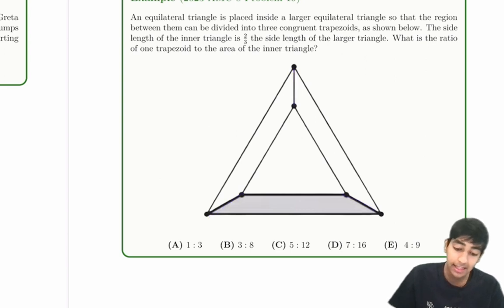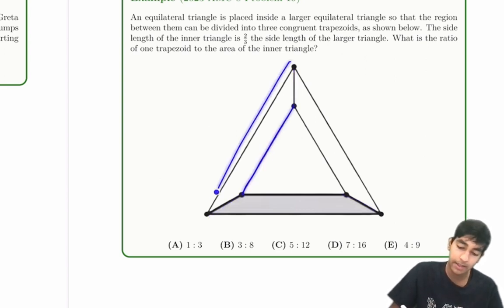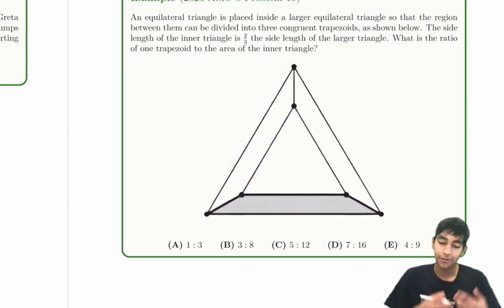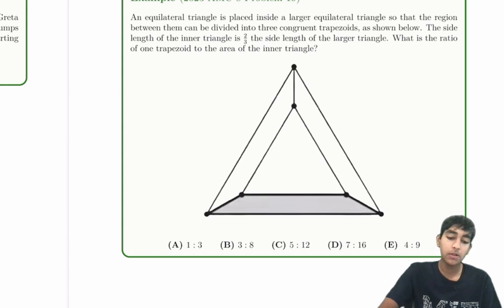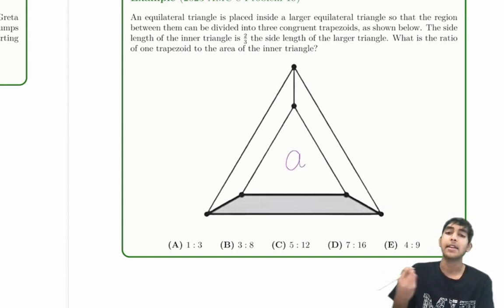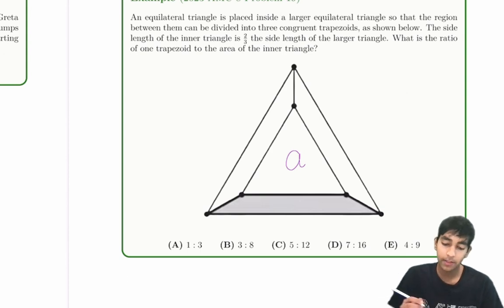The side length of the inner triangle is two-thirds the side length of the big triangle. What is the ratio of one trapezoid to the area of the inner triangle? Let's say the area of the inner triangle is A, so we can relate all the areas to A.